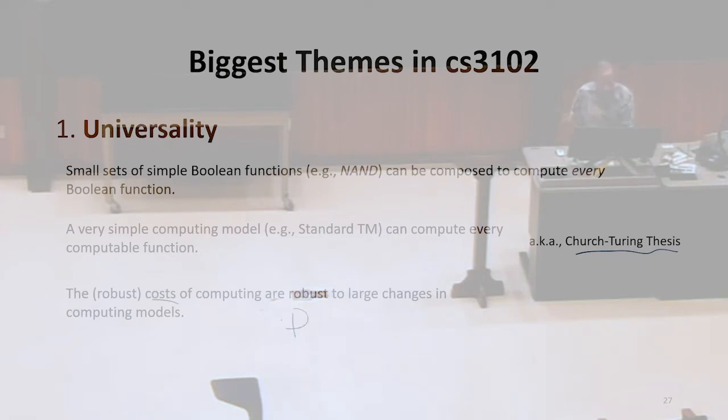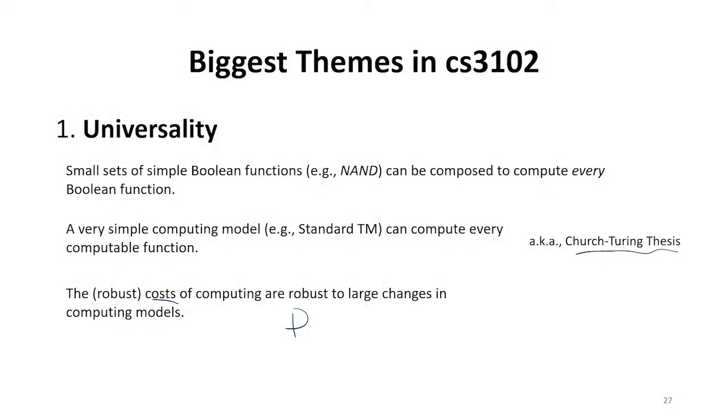this is where we ended up with this class of polynomial time, the cost can be defined very robustly, even if we vary the properties about the machine, like whether it's a RAM machine or a tape machine. The costs change, but within this large computing cost class are the same. So I group all those as being related to universality.